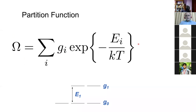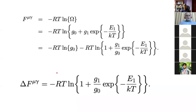If I take the logarithm of the partition function, it gives us the Helmholtz free energy of the system. Specifically, the Helmholtz free energy is minus RT times the log of the partition function. Substituting for the partition function — G0 plus G1 times exp(-E1/kT) — and expanding gives the Helmholtz free energy. To convert to Gibbs free energy, you simply add a pressure times volume change term.